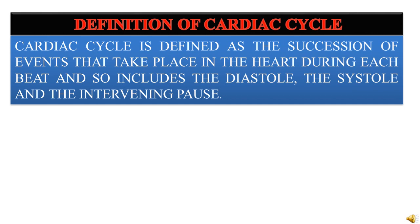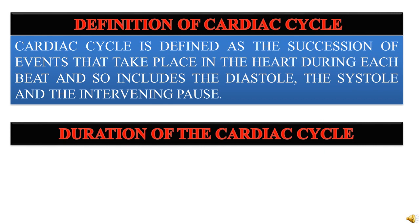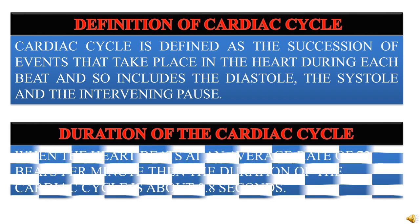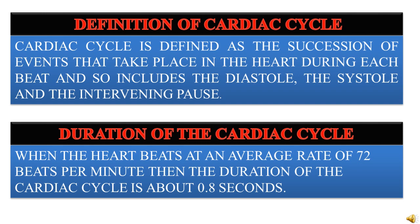The duration of the cardiac cycle: for an average heart rate of 72 beats per minute, the duration of the cardiac cycle is about 0.8 seconds.